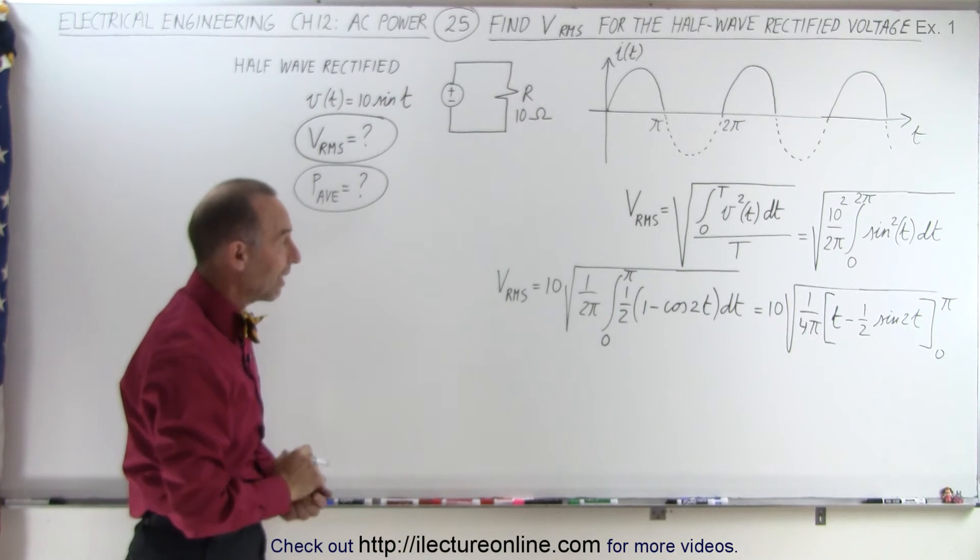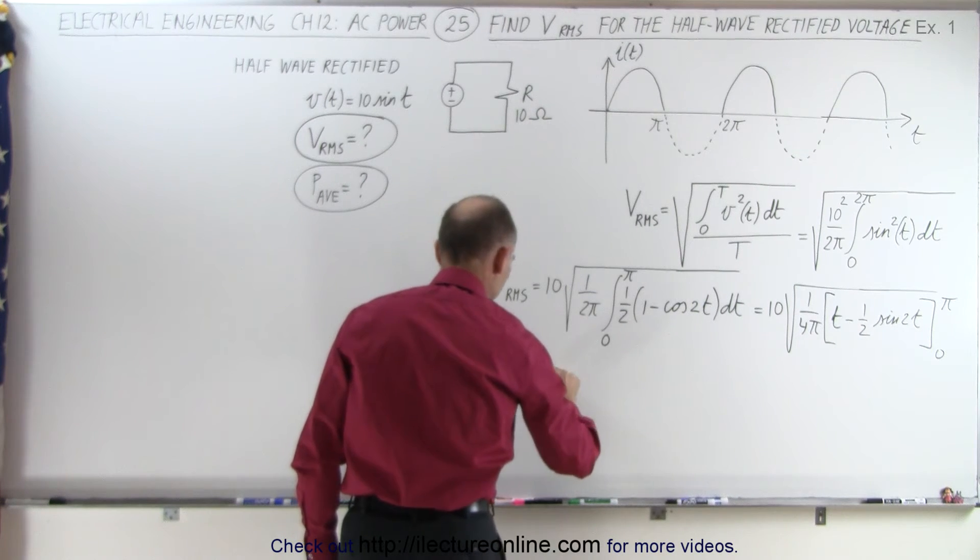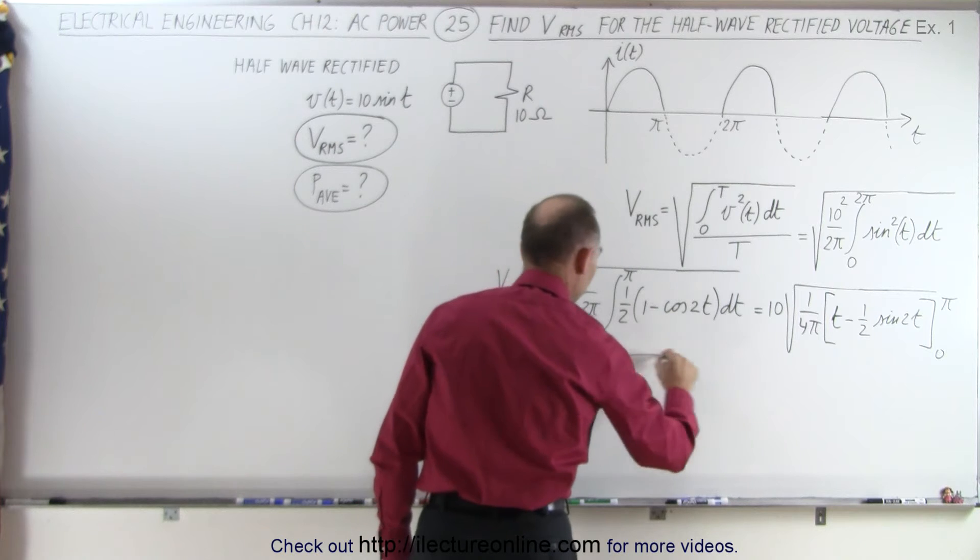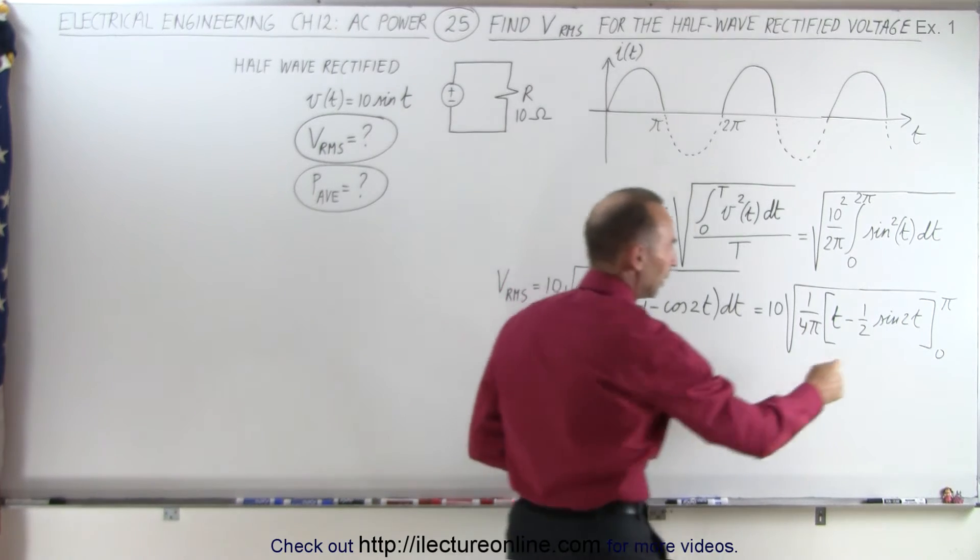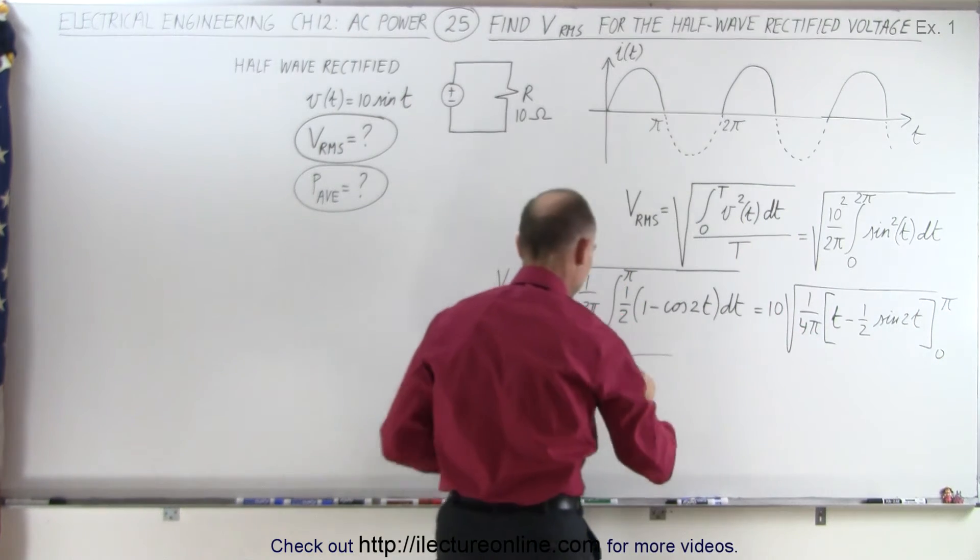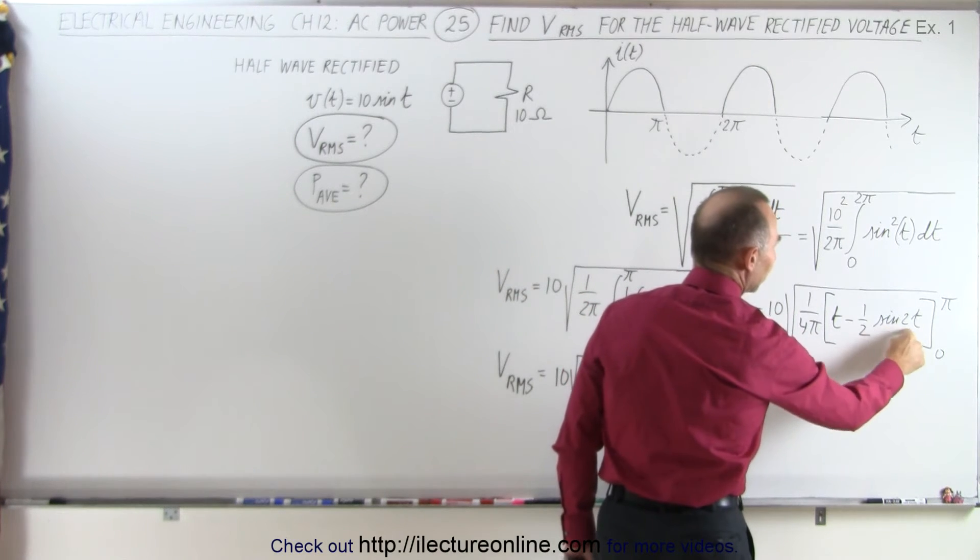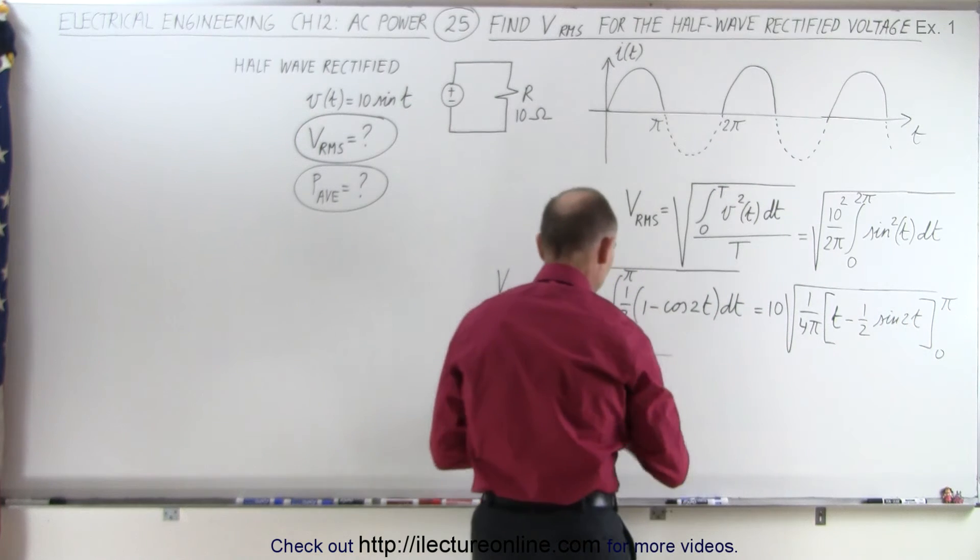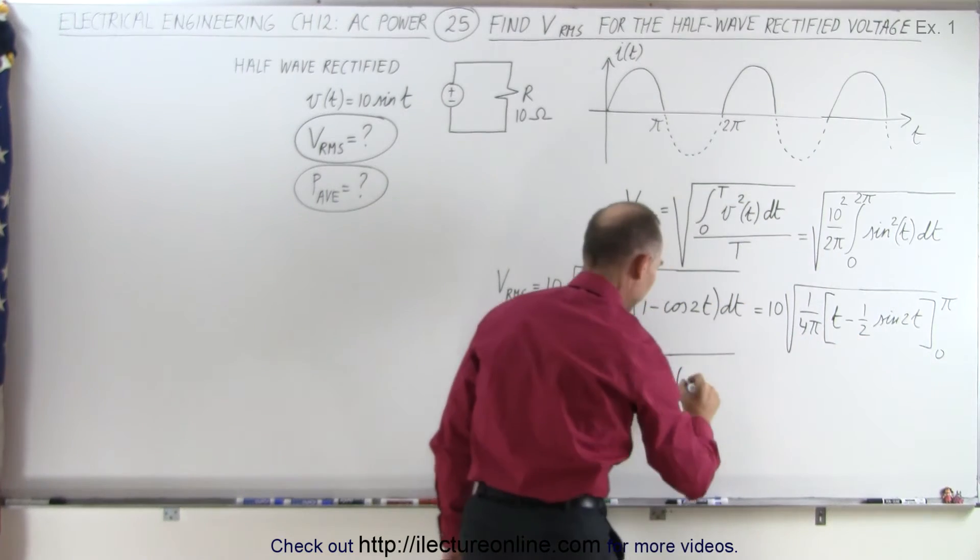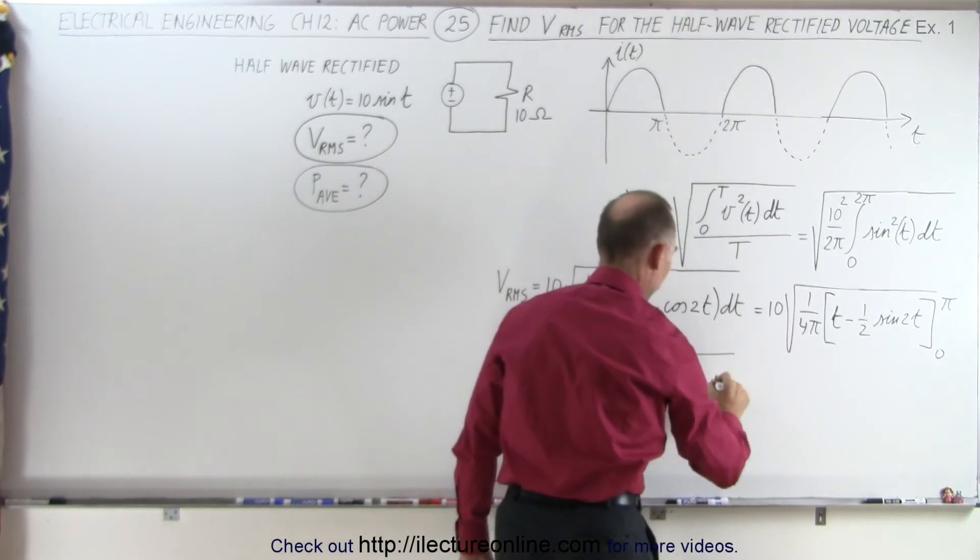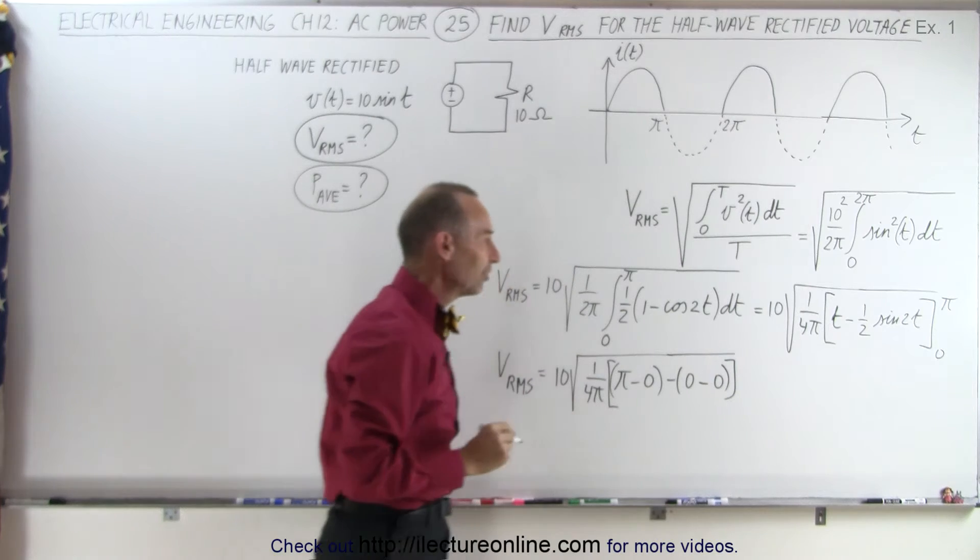Again, the second half of the period, we don't have any value on the function. VRMS is equal to 10 times the square root of 1 over 4π. Now what happens when we plug in the limits? When we plug in the upper limit, we get T becomes π. When we plug in π here, we get the sine of 2π. The sine of 2π is 0, so we have π minus 0. And from that, we're going to subtract. When we plug in the lower limit, we get 0, minus the sine of 0 is 0 as well. So you can see that the only surviving part will be when we plug in the upper limit into the variable T right there.